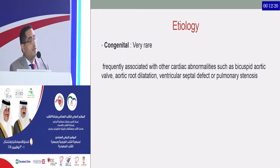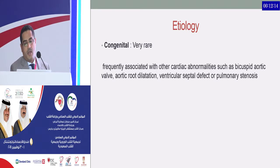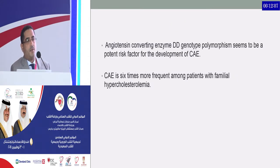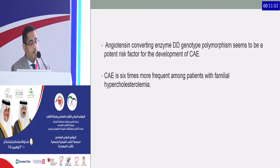Congenital etiology is very rare and usually associated with other comorbidities such as bicuspid aortic valve, aortic root dilatation, VSD, and pulmonary stenosis. There is some genetic association with coronary ectasia, including angiotensin-converting enzyme genotype polymorphism and familial hypercholesterolemia.